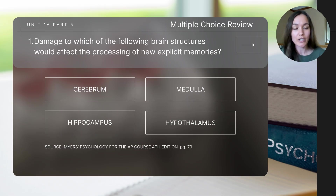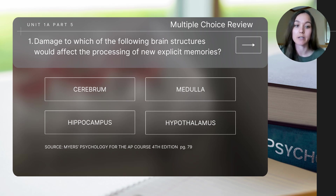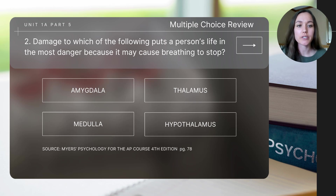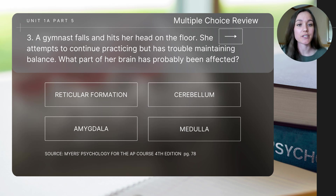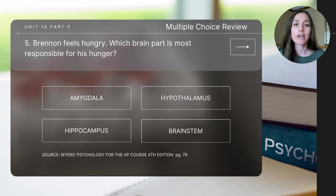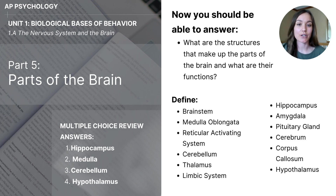Let's finish with a few review questions. I'll read them out loud and you'll need to pause to determine the answer — correct answers will be at the very end of the video. Question one: damage to which brain structure would affect the processing of new explicit memories? Question two: damage to which structure puts a person's life in the most danger because it may cause breathing to stop? Question three: a gymnast falls and has trouble maintaining balance — what part of her brain has probably been affected? Question five: Brennan feels hungry — which brain part is most responsible? This concludes today's video, part five of the unit one series on biological basis of behavior for AP psychology.